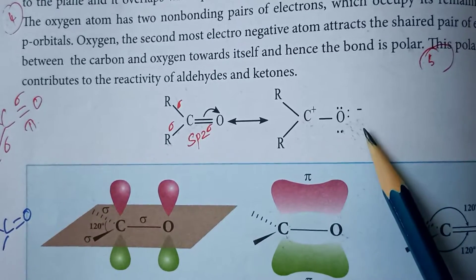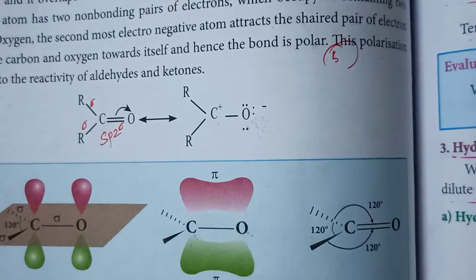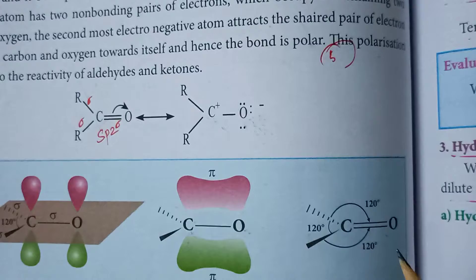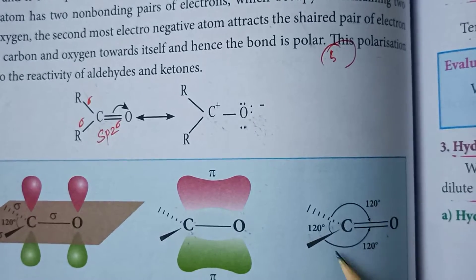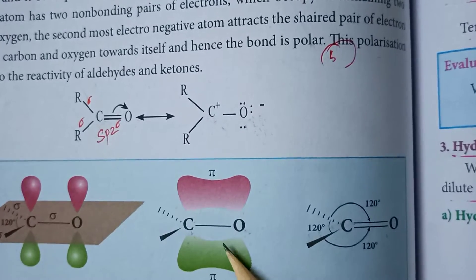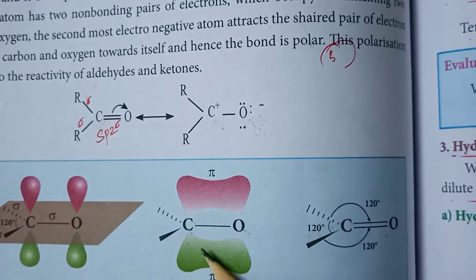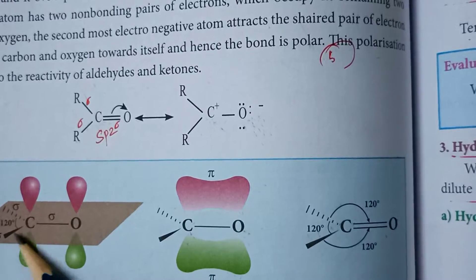The bond angle in the carbonyl group is explained here. The polar nature of the carbon-oxygen group is seen in ketones. The carbon-carbon-carbon and carbon-oxygen bond angle is 120 degrees. The pi bond is formed by the sideways overlap of the 2p orbitals from above and below the plane, forming a cloud-like structure. The planar sigma bond framework is also represented.